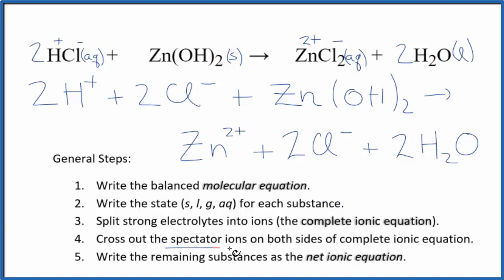Now we can cross out those spectator ions. They're on both sides. So in the reactants and the products. In the reactants, I see I have two chloride ions, and I also have that in the products. Those are spectator ions. Get rid of those.